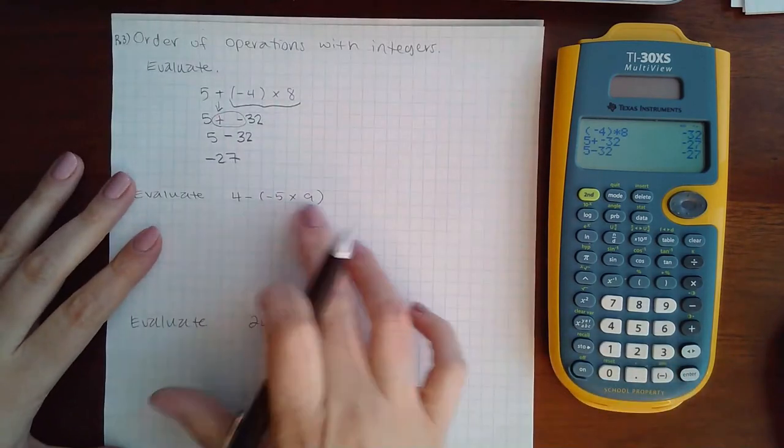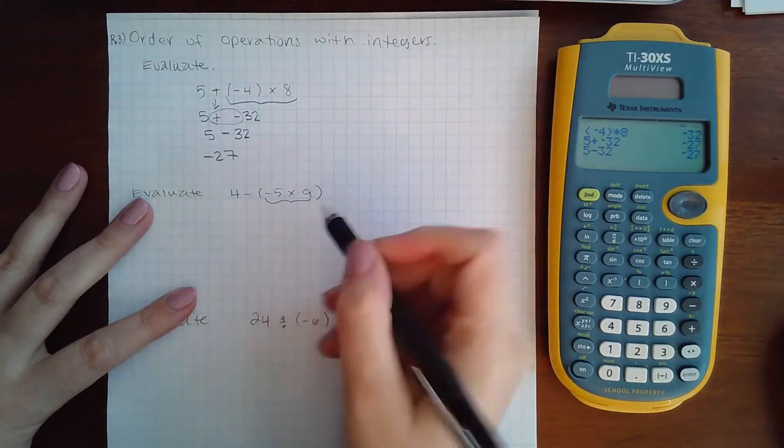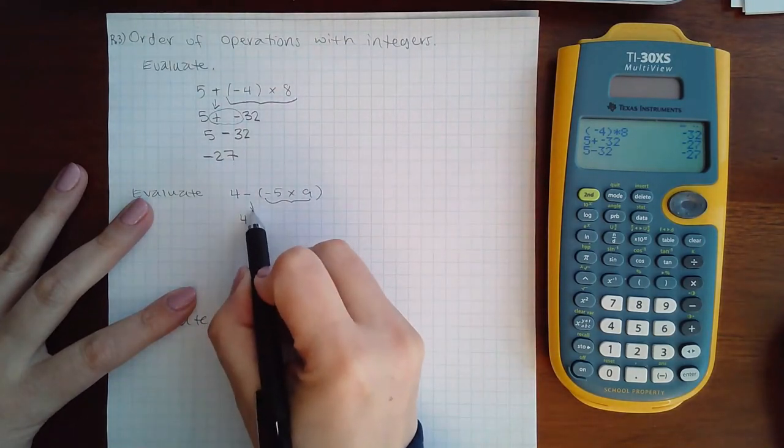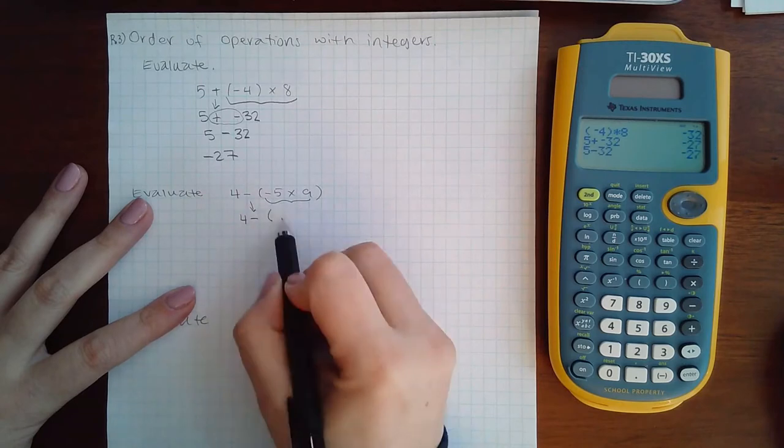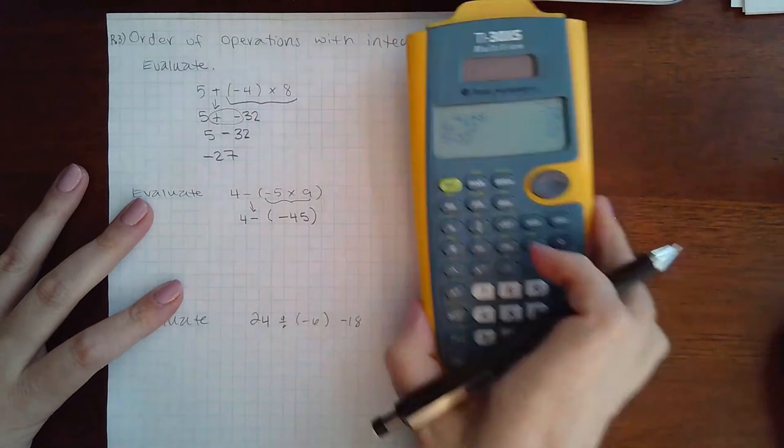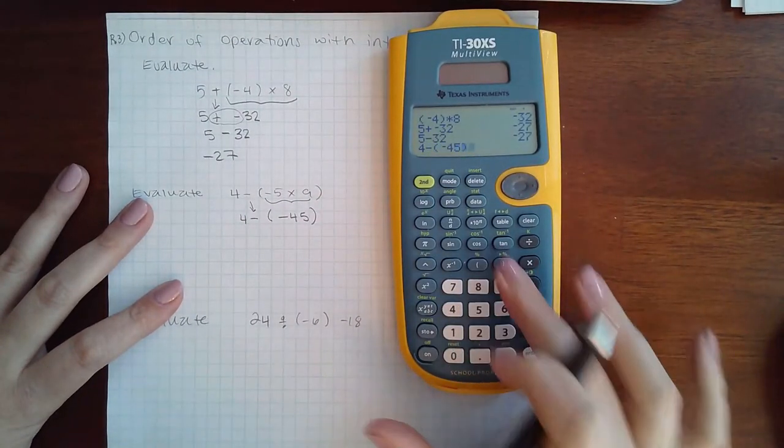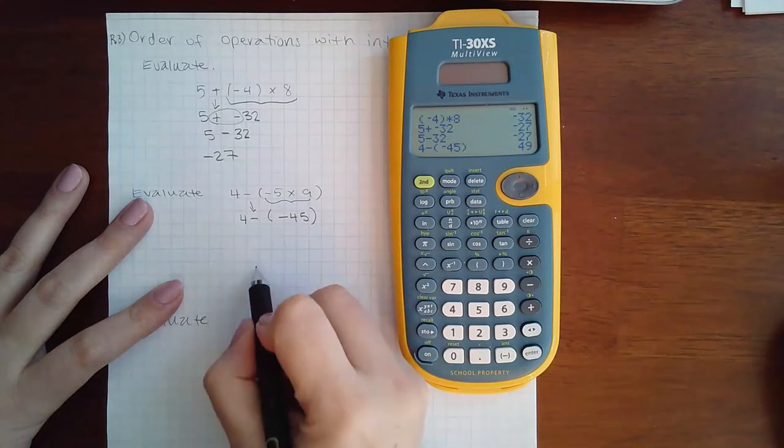Now here I do have parentheses and there is something to do inside, so that's a group step. I'm going to bring down the 4 and the minus, and here I'm going to end up with negative 45. Then in my calculator, I could type 4 minus parentheses negative 45, and I would get 49.